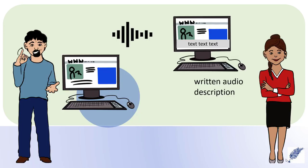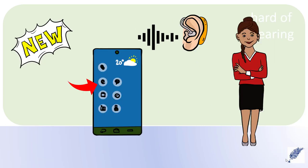For most people with hearing impairments, it is very important to have written audio description. Elena says: since there is now even an app for volume, inductive hearing and sound adjustment for my hearing aid, I use my smartphone all the more frequently.